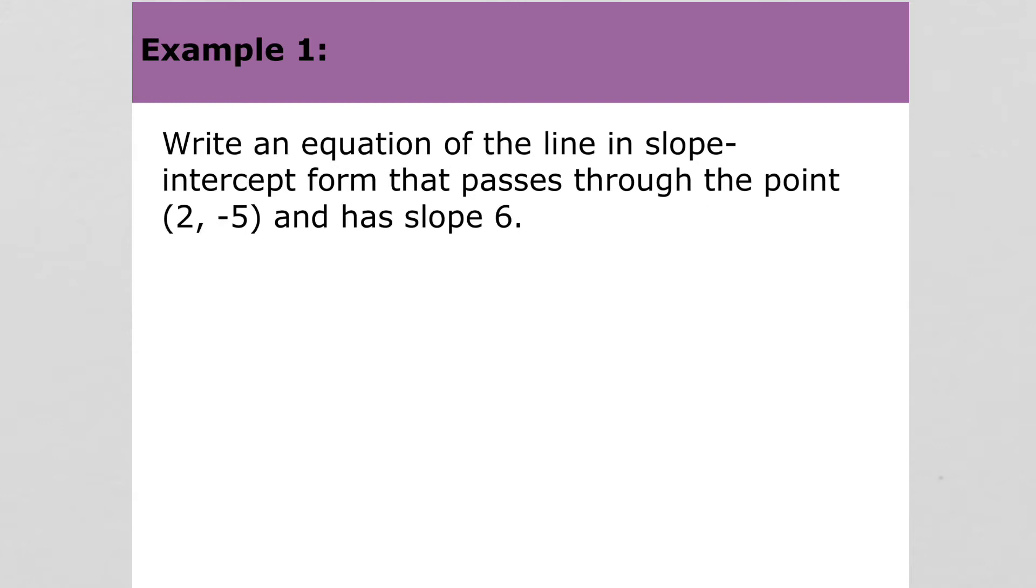Example 1 says write an equation of a line in slope intercept form that passes through the point and has a slope of 6. I'm going to do this using point slope form to get there. You can always do it another way if you've learned a different way, that's fine as long as you get the right answer. I'm going to go just for consistency through point slope form.